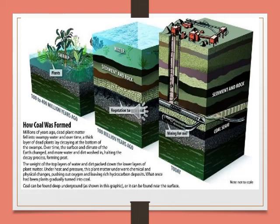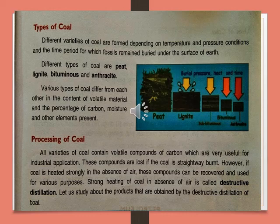The first picture shows 10 to 400 million years ago. In the second picture, the material is converted into peat, around 100 million years ago. Today, the coal is formed in its anthracite stage and can be obtained from the mine. Different varieties of coal are formed depending on temperature and pressure conditions and the time period for which the fossils remain buried under the surface of the earth.